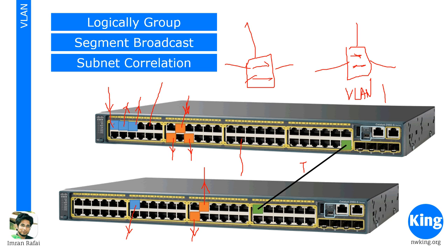Once we change specific ports to VLAN 10 or VLAN 20, those groups become logically separate switches. VLAN segments broadcasts so that traffic stays within its VLAN. The switch creates a VLAN database — it records which ports belong to which VLAN. Each of these VLANs will need its own separate subnet for communication.